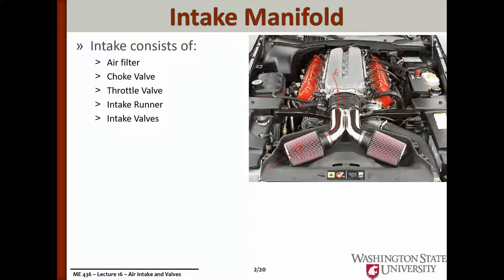The intake consists of an air filter, and then in a traditional carbureted engine, we would have a choke valve upstream of the carburetor, and then a throttle valve. The air travels down the runner and into the engine, where it finally has to go through the intake valves to get into the cylinder.